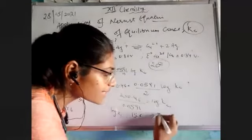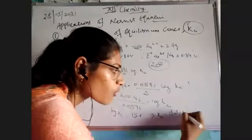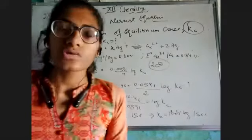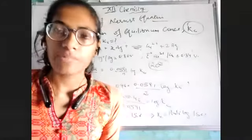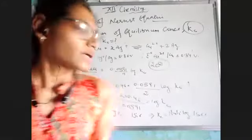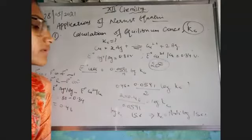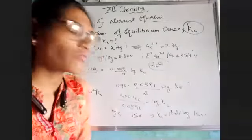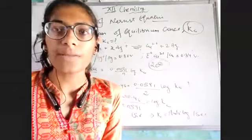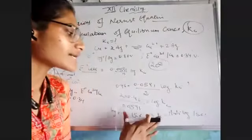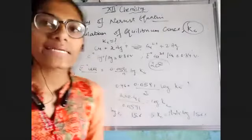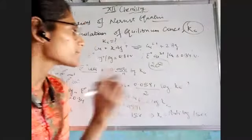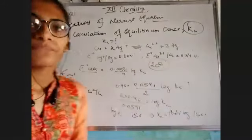After solving, log Kc comes to approximately 15.66. So to calculate Kc, we need to take the antilog of 15.66. Please keep in mind that a logarithm table would be needed. Just check out how to calculate the log value and the antilog value. The possibility of this question coming in the exam is a little less because of the complex antilog calculation, but please keep in mind how we can calculate Kc.